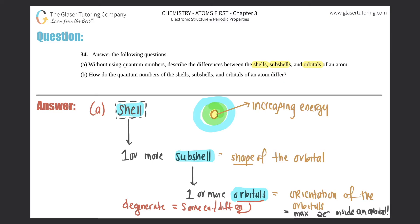So that basically answers question a. We didn't use any quantum numbers. We just described the shells, the subshells, and the orbitals. Now for b, how do the quantum numbers of shells, subshells, and orbitals of an atom differ? Well now we just have to put together what the quantum number for a shell is, what the quantum number for a subshell, and what the quantum number of orbitals are.